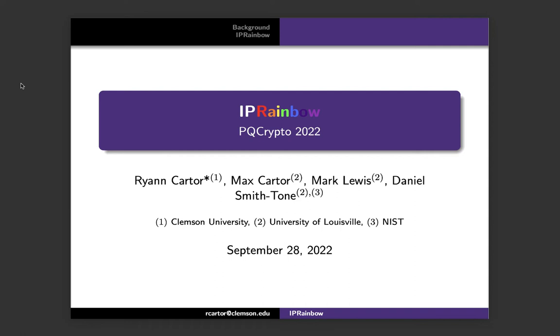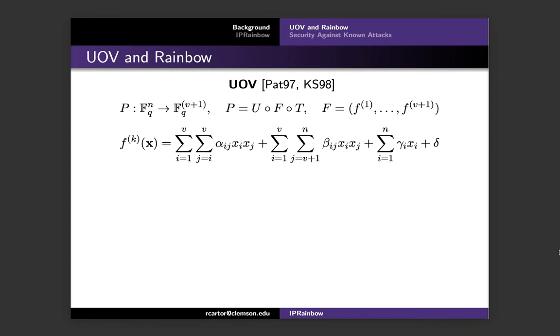In this talk we will present a new variant of the Rainbow Signature Scheme. To start this presentation we will review the UOV and Rainbow Signature Schemes. The Oil and Vinegar Scheme was first introduced by Patarin in 1997 after the break of C-STAR. Kipnis and Shamir were able to break this balanced oil and vinegar scheme and introduced the unbalanced oil and vinegar scheme, also known as UOV, in 1998.